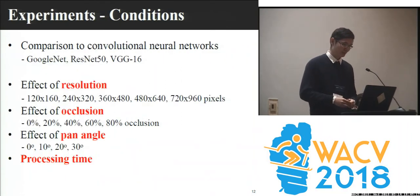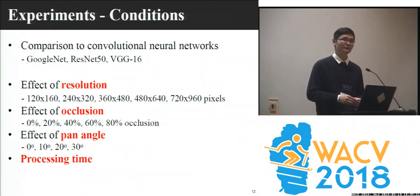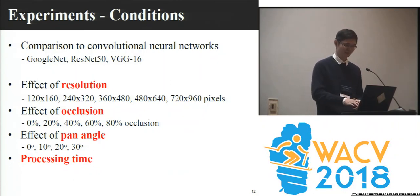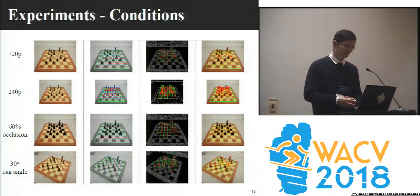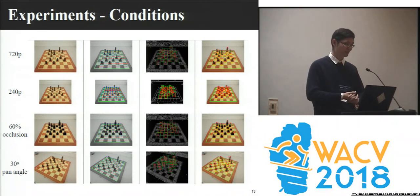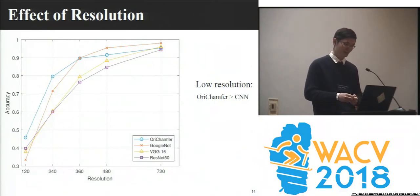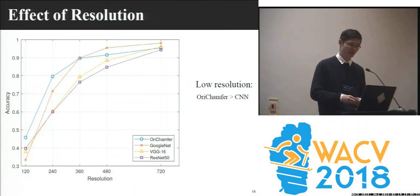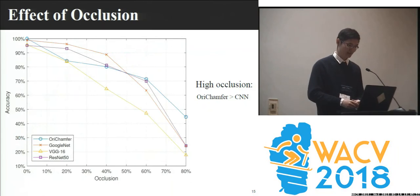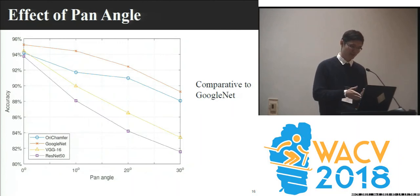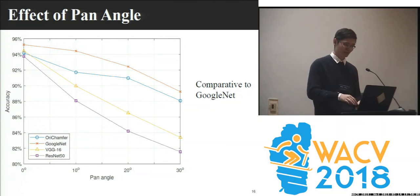In the experiments, we compare our method to convolutional neural networks including GoogleNet, ResNet50, and VGG, in terms of different resolution, occlusion, and pan angle, and analyze their processing time. The first and second rows show test images at different resolutions; the third row shows a test image with 60% occlusion; and the last row shows a test image with a 30-degree pan angle. As resolution increases, we have more detailed contours for matching and the accuracy increases. As occlusion increases, we lose features and accuracy decreases. As the pan angle increases, we have irregular occlusion and accuracy drops as well.